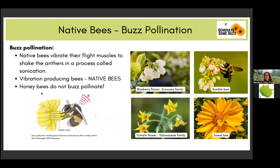Another very important and fascinating fact about native bees is buzz pollination — and our program is called Generate Some Buzz, so I love that. Honeybees are not able to perform buzz pollination. When a native bee flies on a flower, it can vibrate its flight muscles to shake the anthers of the flower, creating a sonication that releases a higher volume of pollen. Many native plants like blueberry and tomato require pollination by native bees or bumblebees and cannot be pollinated by honeybees. The best buzz pollinators are carpenter bees and bumblebees, but even tiny sweat bees can perform buzz pollination.